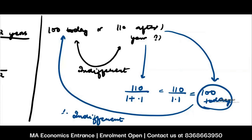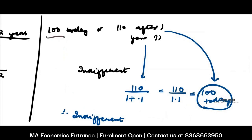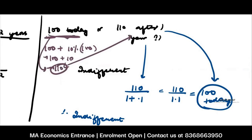So basically: present value is when you have a stream of payments in the future and you bring it to the present. Future value is when you have a payment today and you find what its value will be in the future. Here I could have found the future value also: 100 today means 100 + 10% on 100 = 110 after one year, which is the same as the other payment of 110 after one year. So you can follow either concept — in intertemporal choice, different books follow different techniques but they lead to the same solution.